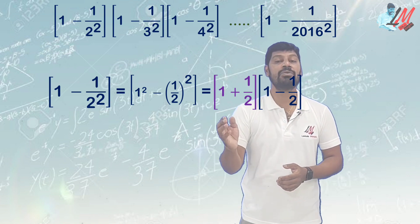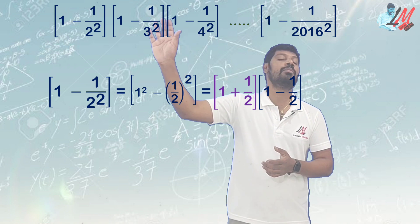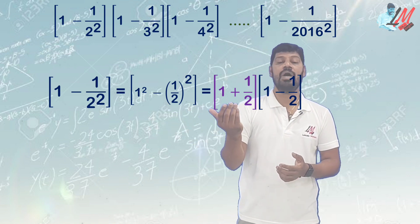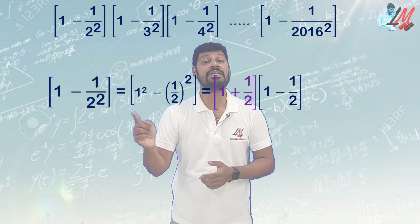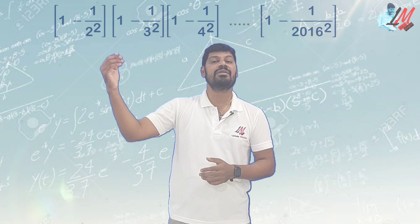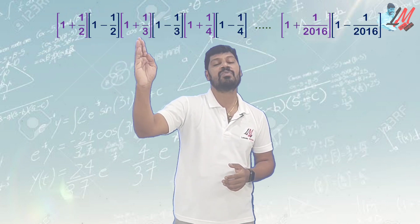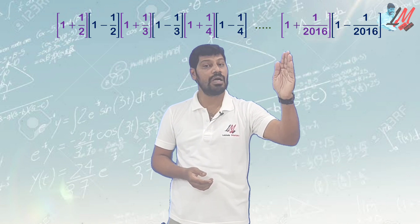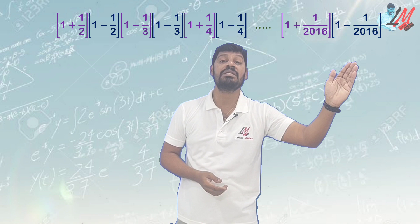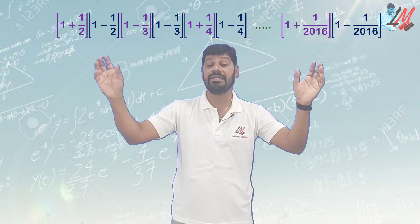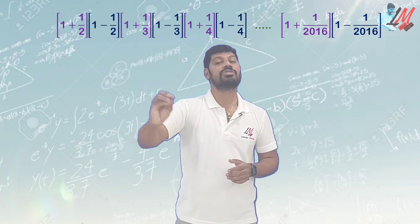So (1 minus 1/2 squared) equals (1 plus 1/2) into (1 minus 1/2). Similarly, the next bracket gives (1 plus 1/3) into (1 minus 1/3). Each individual bracket is a product of two factors. The full expression becomes: (1 plus 1/2)(1 minus 1/2) into (1 plus 1/3)(1 minus 1/3) into (1 plus 1/4)(1 minus 1/4) and so on, up to (1 plus 1/2016)(1 minus 1/2016).